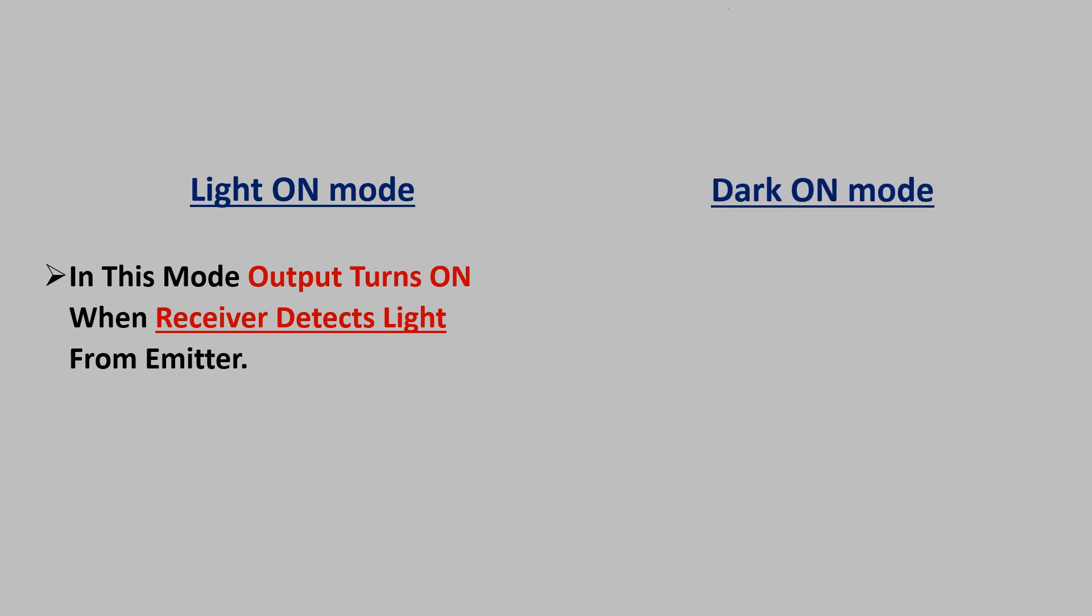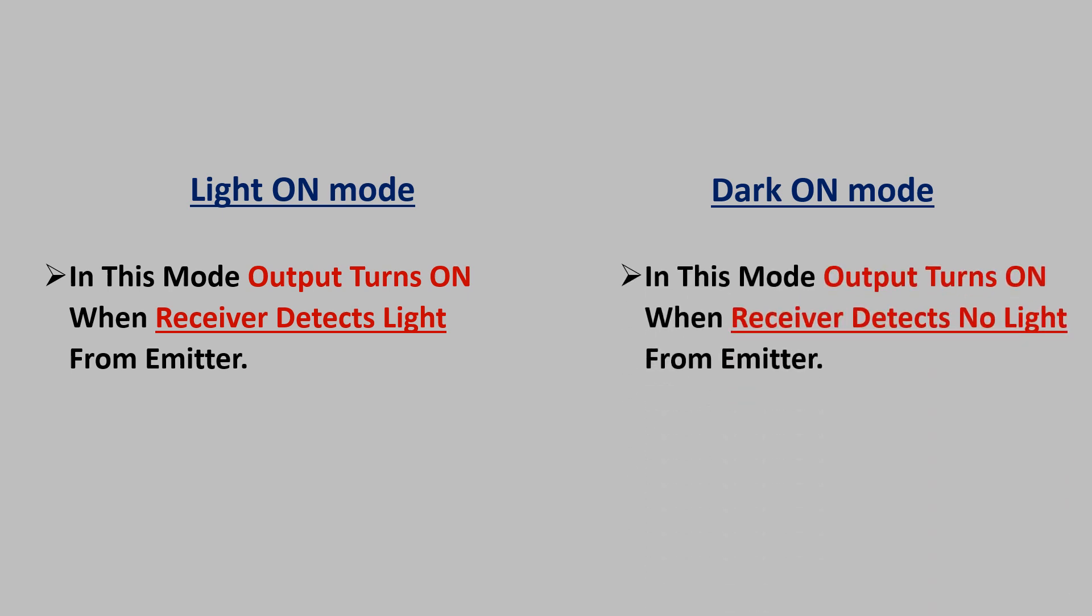Light on refers to the state that the receiver of the photoelectric sensor receives sufficient light. In this mode, the output turns on or load is energized when the receiver detects the light from the emitter. Dark on means there is no light reflected to the receiver of the photoelectric sensor. In this mode, the output turns on or load is energized when the receiver receives no light.